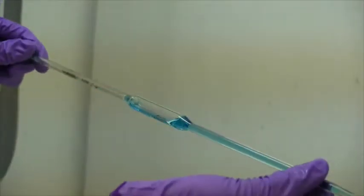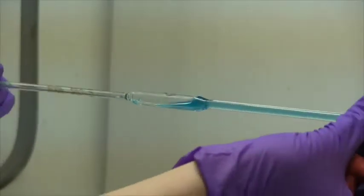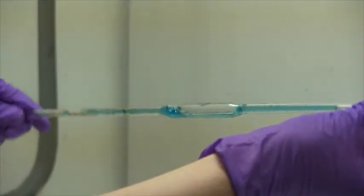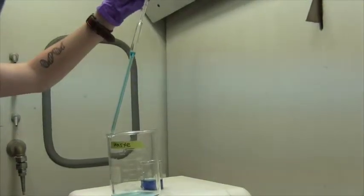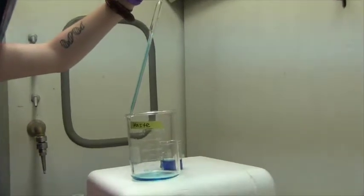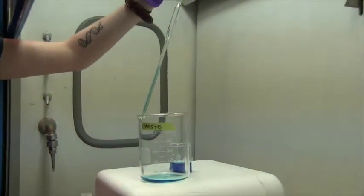Remove the pipette bulb and begin swirling and tipping your pipette to coat the inner surface with your solution. Drain the pipette into your waste beaker. Be sure to repeat the rinsing procedure at least three times.